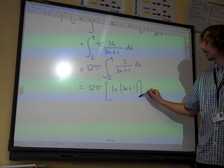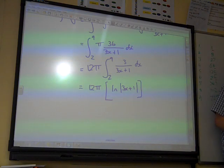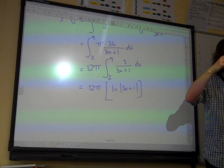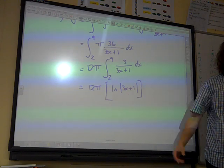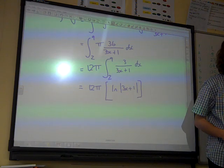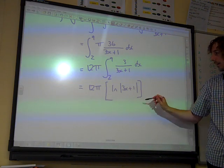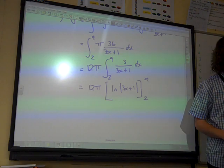It's just the natural log of 3x plus 1, isn't it? Remember the rule that we've got from core 4 that says that if the integral of f dashed x over f of x, that's equal to the natural log of f of x, I call it Crane's rule for no particularly obvious reason. And that's what we're evaluating between 2 and 9.